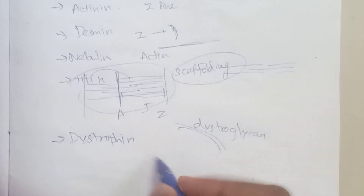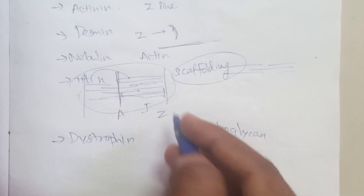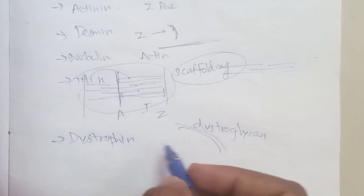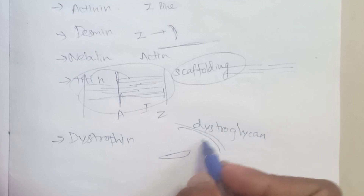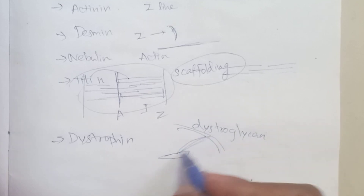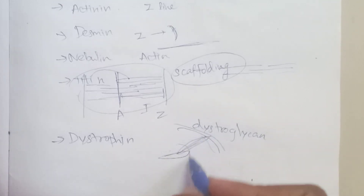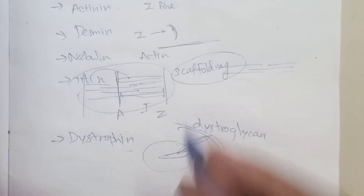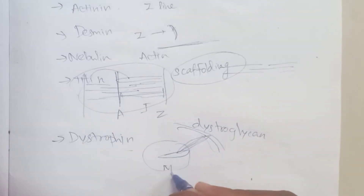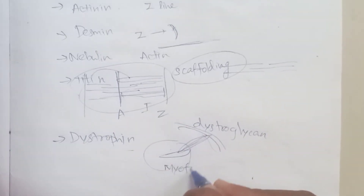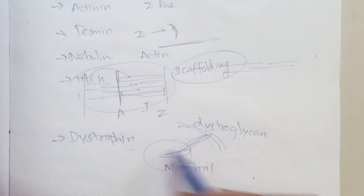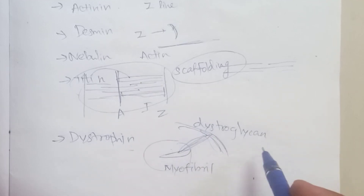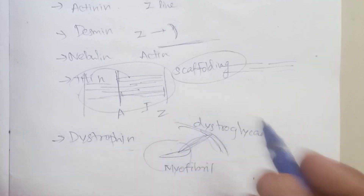Dystrophin is an accessory protein of the sarcomere. The sarcomere connects via dystroglycan as an accessory protein to the cell membrane. These two proteins - dystrophin and dystroglycan - are connected as the dystrophin-glycoprotein complex, linking myofibril and sarcomere to the sarcolemma.